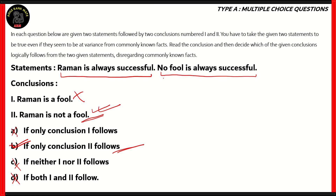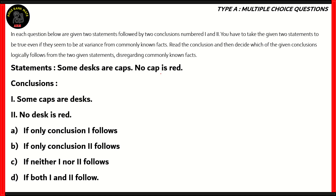Let's look at another question. It's a similar question, so we have the similar instructions at the top. Let's look at the statements and conclusions. The statements are: some desks are caps; no cap is red. The conclusions are: one, some caps are desks; two, no desk is red. We need to find out which of these conclusions follows from the statements.